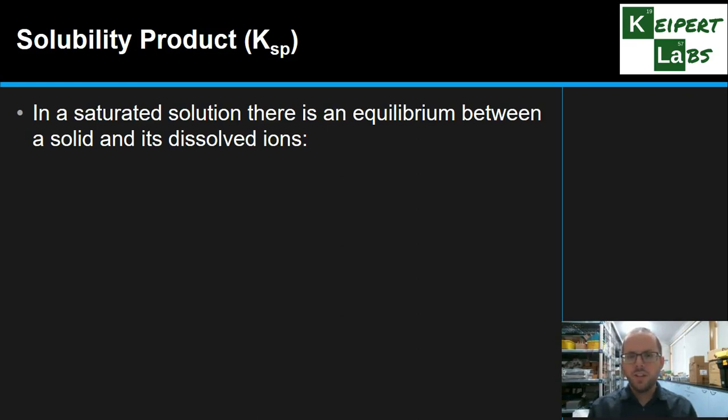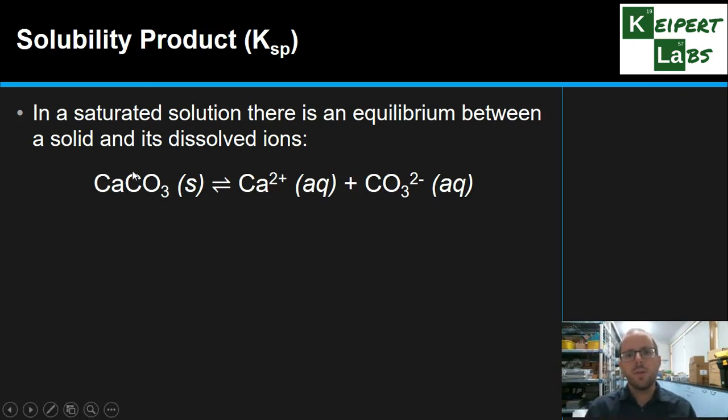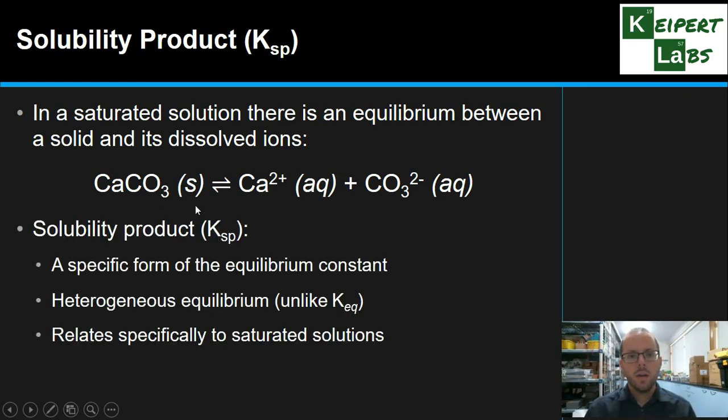We say that a saturated solution is actually an equilibrium between the solid and its ions. Rather than them just being dissolved and then that's it, there's continually ions from the solid that are dissolving, there are ions in the solution that are precipitating out, and we get this equilibrium established. So if we look at calcium carbonate, for example, a classic example of a sparingly soluble compound, some of the solid will dissolve to form the separate ions, some of the ions will stick together to form solid calcium carbonate in an equilibrium.